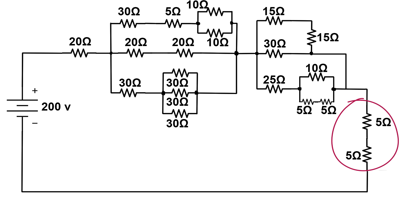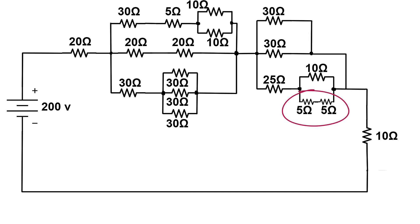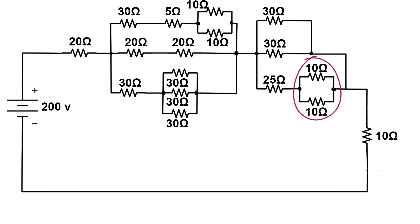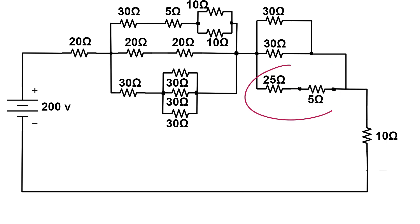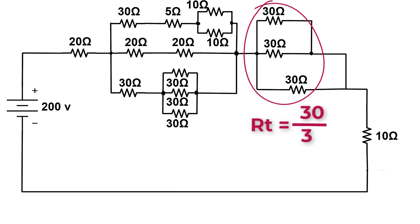Now we have two series resistors: 5 plus 5 equals 10 ohms. Here we have two series resistors: 15 plus 15 equals 30 ohms. Here, 5 plus 5 equals 10 ohms, in parallel with 10 ohms, giving 5 ohms. Then 5 ohms in series with 25 ohms equals 30 ohms. Now we have 30 parallel to 30 parallel to 30, so 30 over 3 equals 10 ohms.